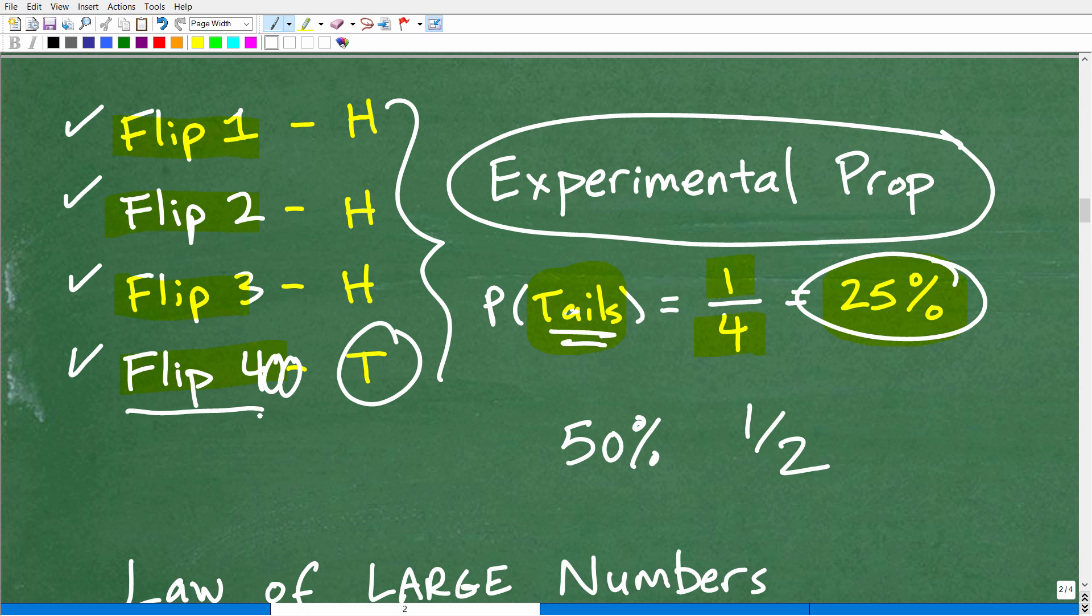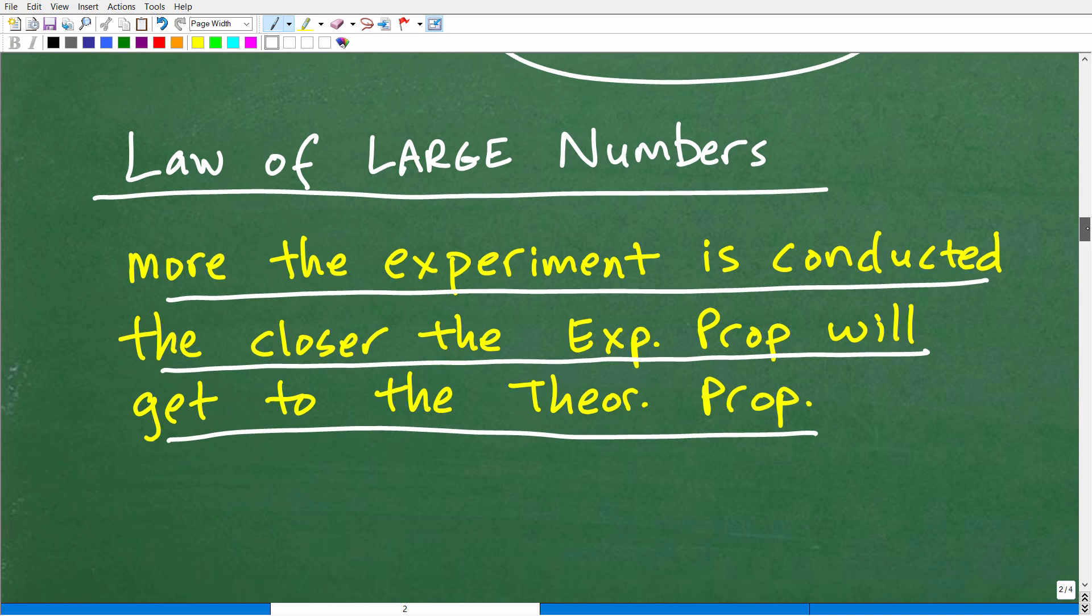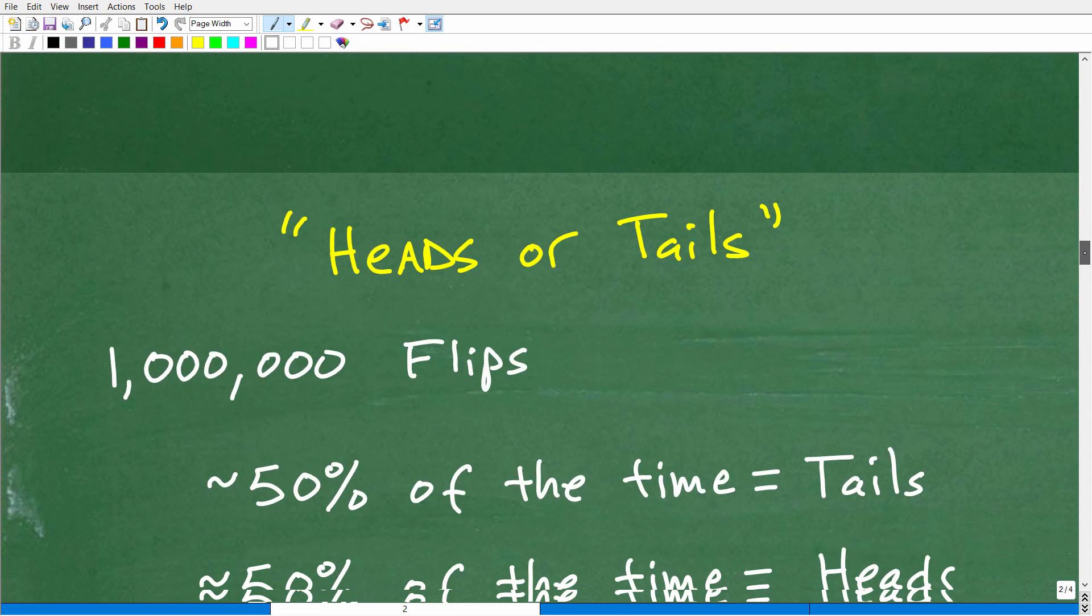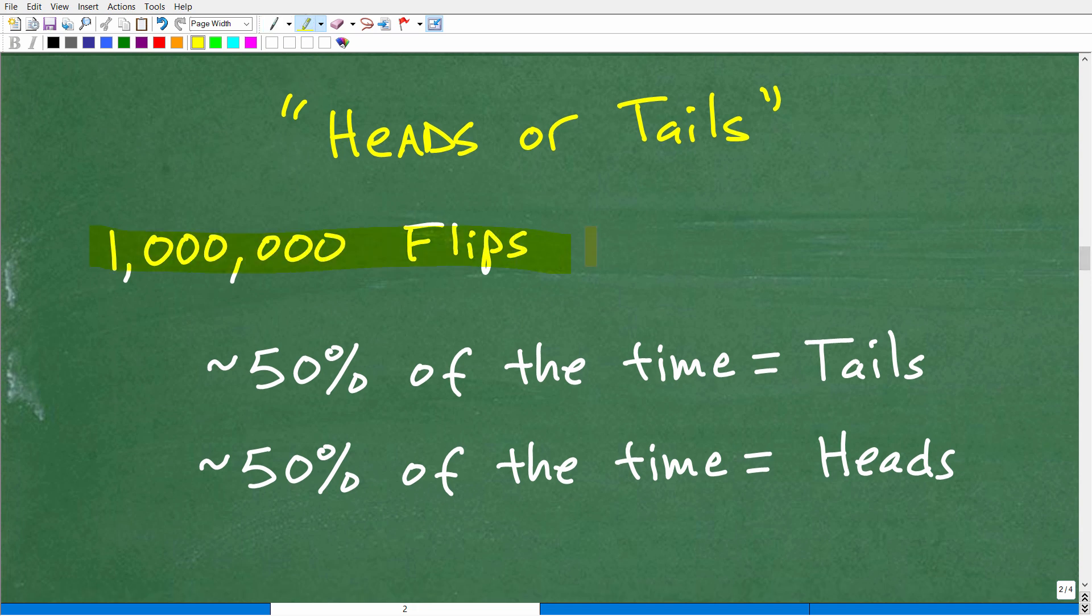Well, the more flips you do, the closer this experimental probability is going to get to what we expect. So this is the whole idea of the law of large numbers. So effectively, if I was going to play this head or tails game and we did a million flips, well, about almost precisely 50% of the time you would get tails and about 50% of the time you would get heads. That's something that we can definitely almost count on, but we have to apply the law of large numbers. So if you're only doing a few trials, it may not turn out the way you expect from a theoretical standpoint. But over a large number of trials, then, yes, your experiment will get closer to what you thought it was going to be from a theoretical standpoint.